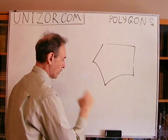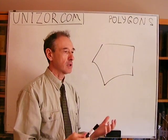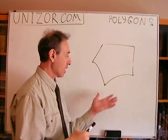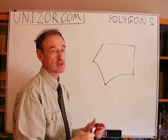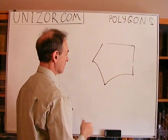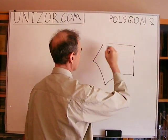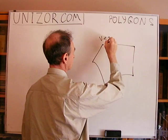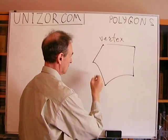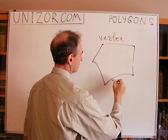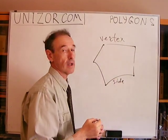Polygons can be differentiated by the number of segments or the number of vertices, which is exactly the same thing. Every endpoint of every segment is called a vertex. The segment itself is usually called a side, or a leg sometimes.